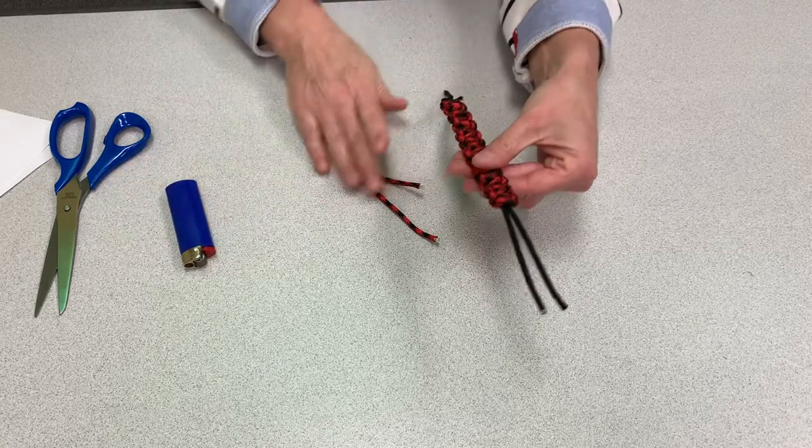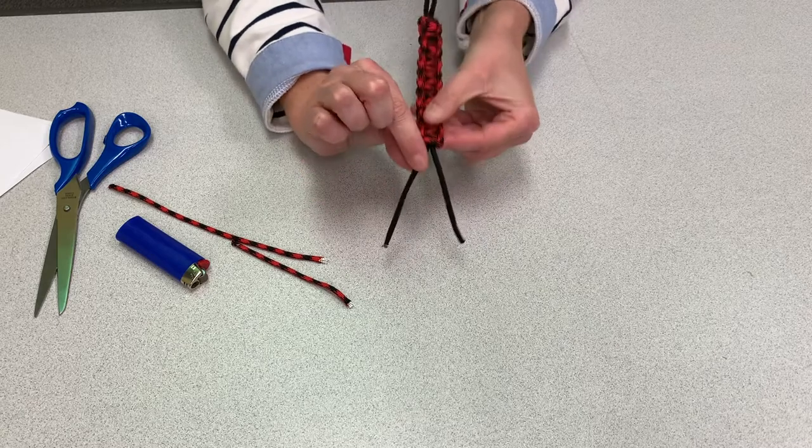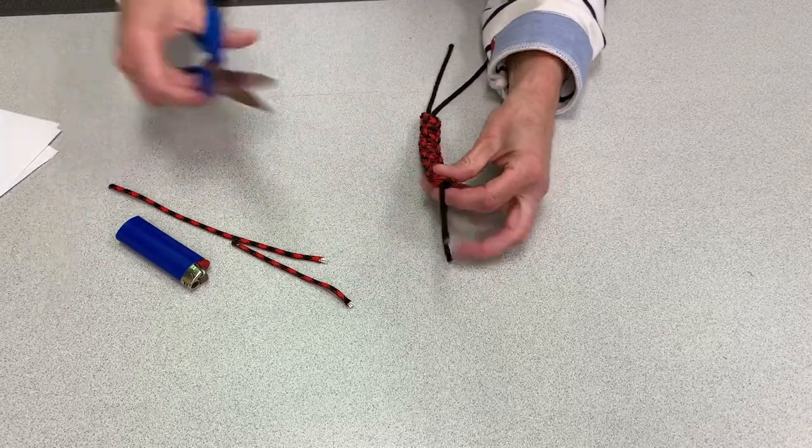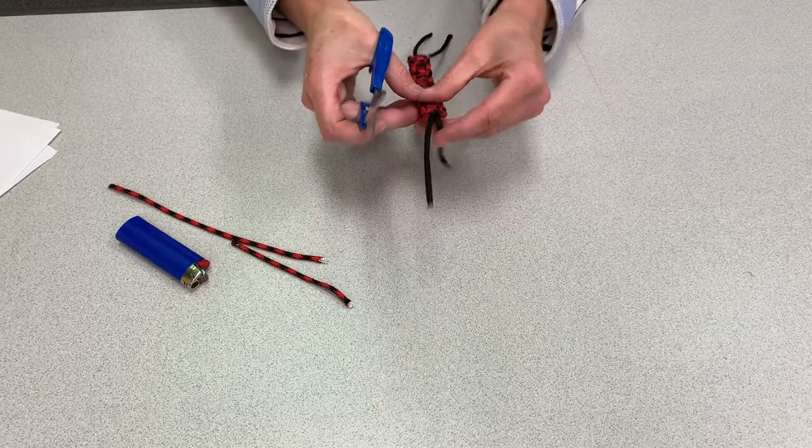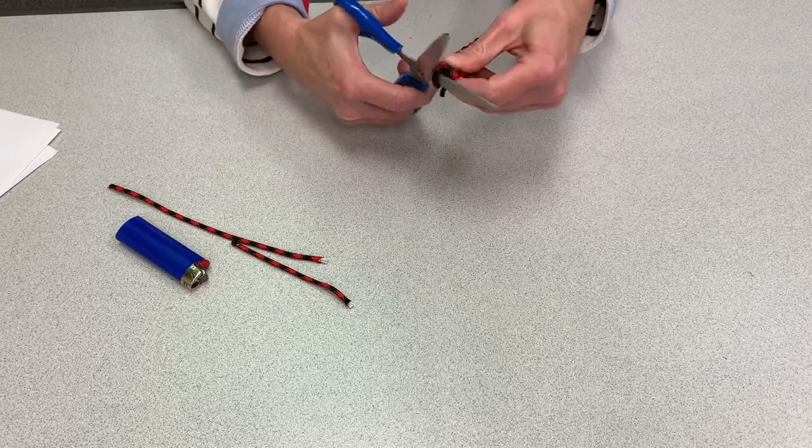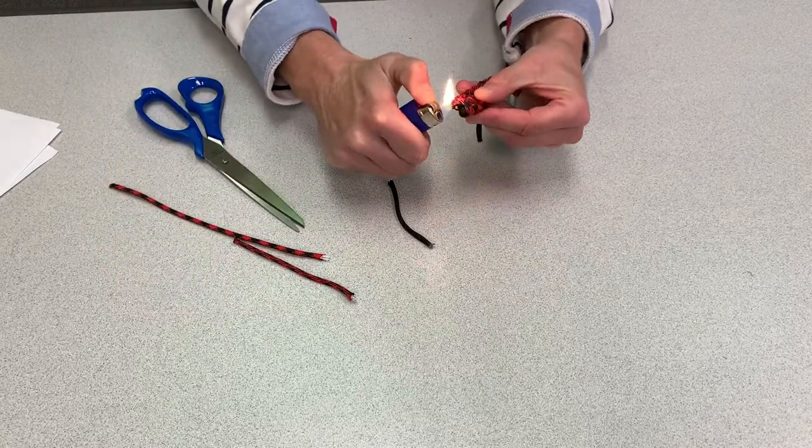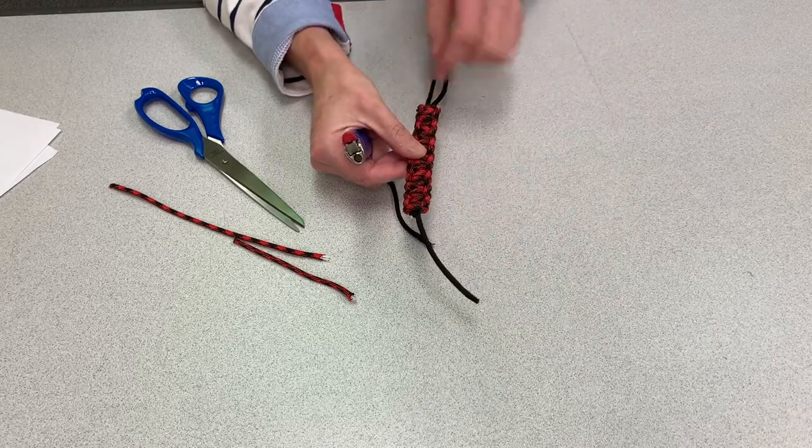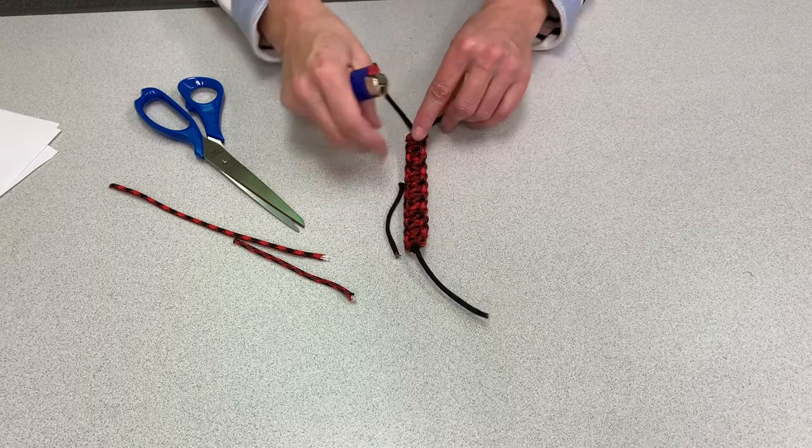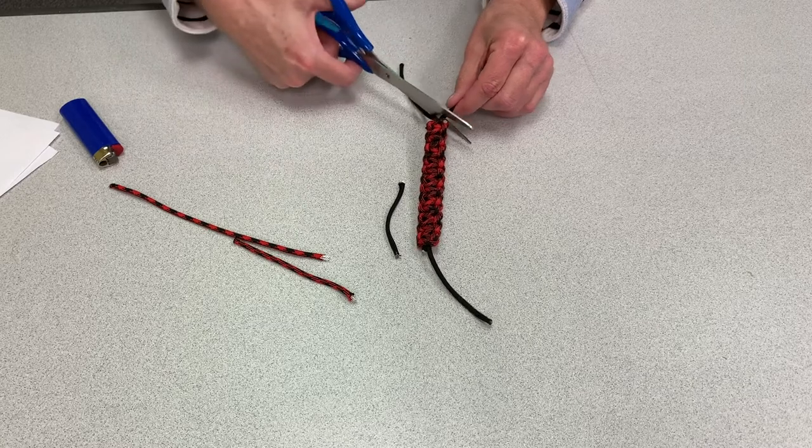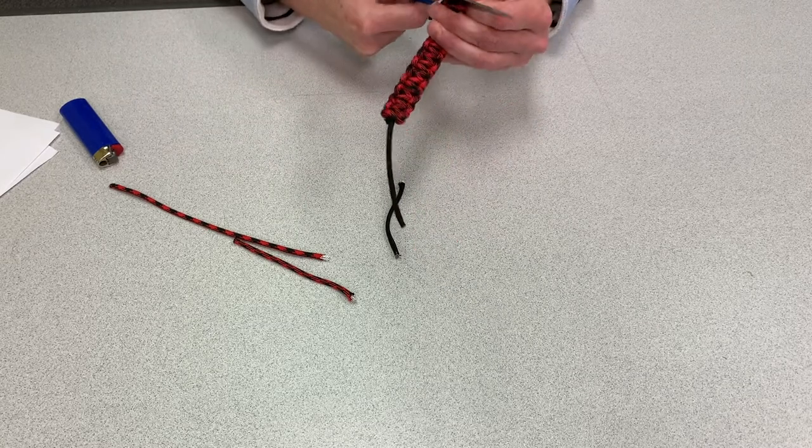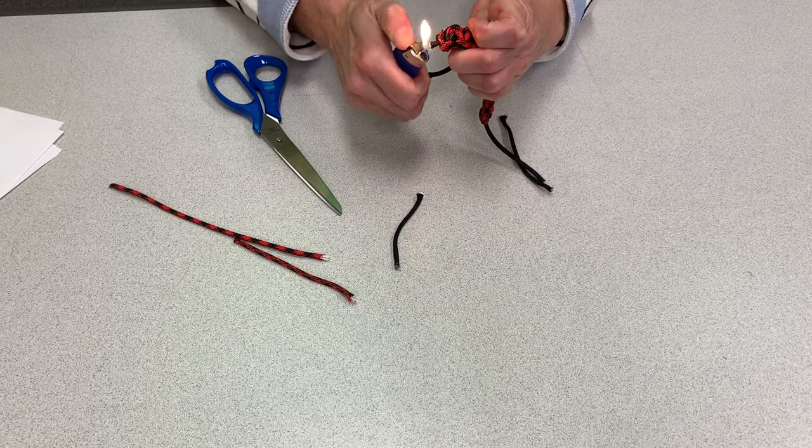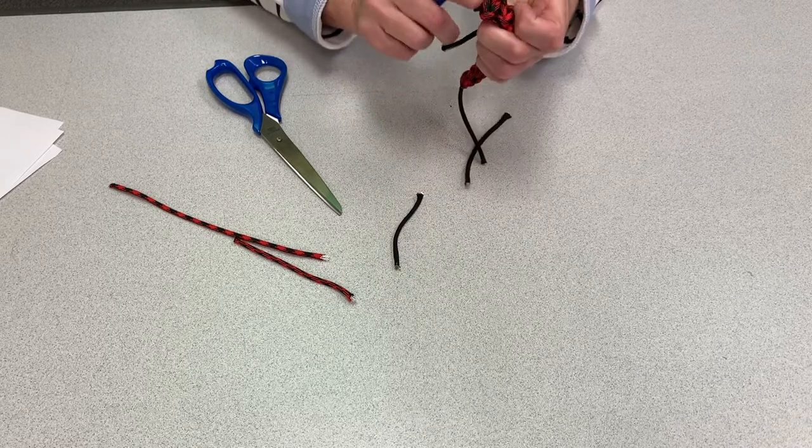Okay. So now I'm going to cut off the opposite black pieces from either side. We only need one black cord on each side. So I'm going to cut the alternating cords. Again. And now I'm going to leave this opposite cord alone. And I'm going to cut this side.